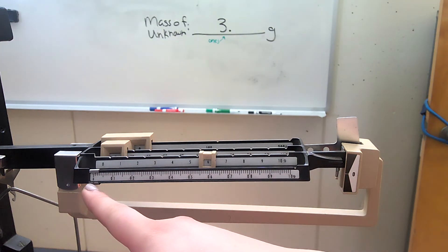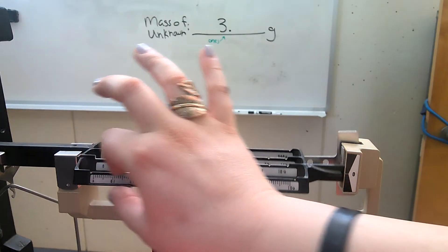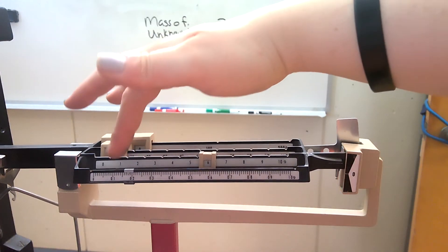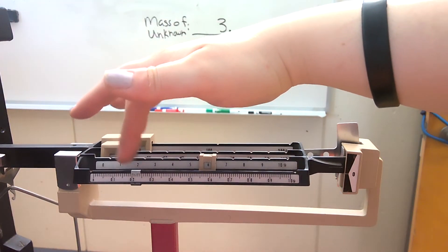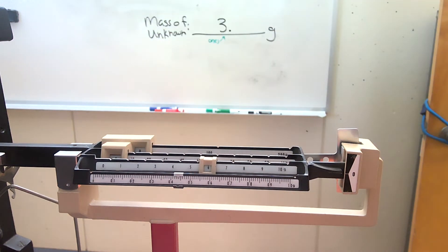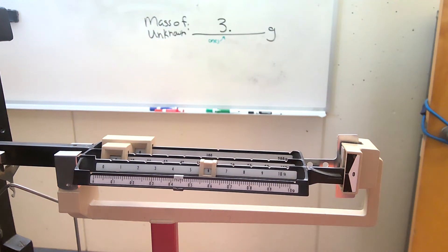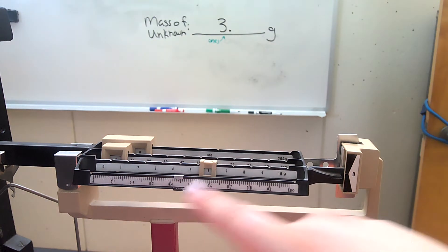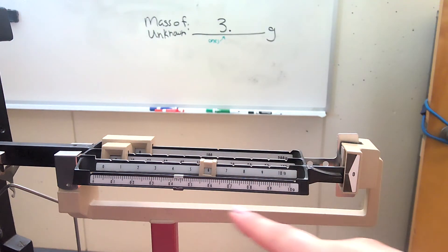So this is where you're going to move this rider very patiently and slowly because you're going to get to the very precise measurement of this. So I'm going to keep going. So I went past four and that went down past the zero, so that means this is too heavy.